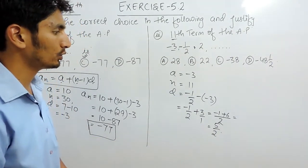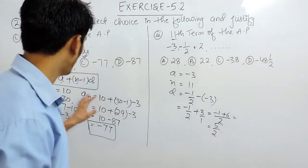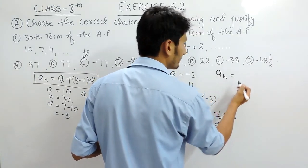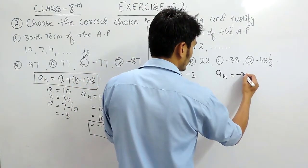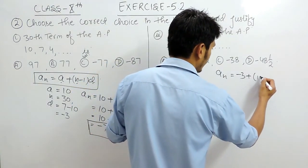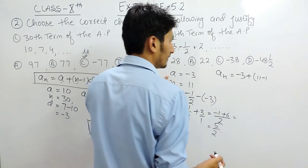Now we can use the formula. For that, we have to find the nth term, which is the 11th term. For that, we have our first value, the first term, as -3, plus the value of n is 11.